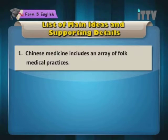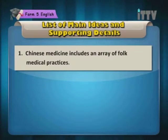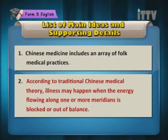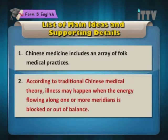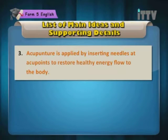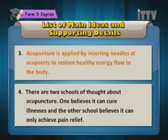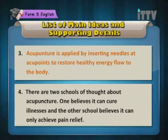The first sentence: Chinese medicine includes an array of folk medical practices. The second sentence: According to traditional Chinese medicine, illness may happen when the energy flowing along one or more meridians is blocked or out of balance. The third sentence: Acupuncture is applied by inserting needles at acupoints to restore healthy energy flow to the body. The fourth sentence: There are two schools of thought about acupuncture — one believes it can cure illnesses and the other believes it can only achieve pain relief.